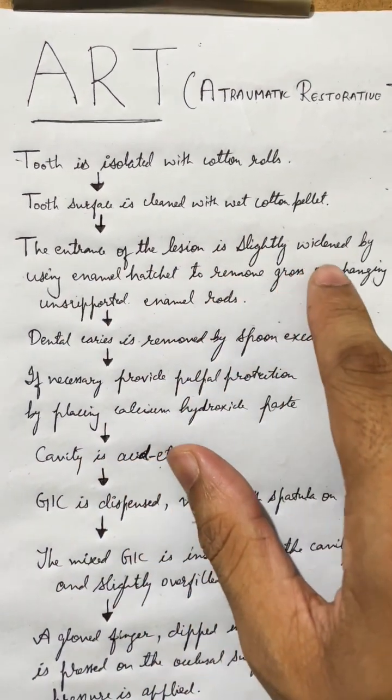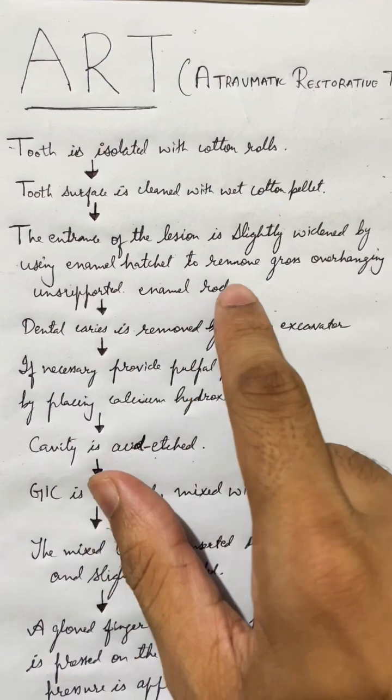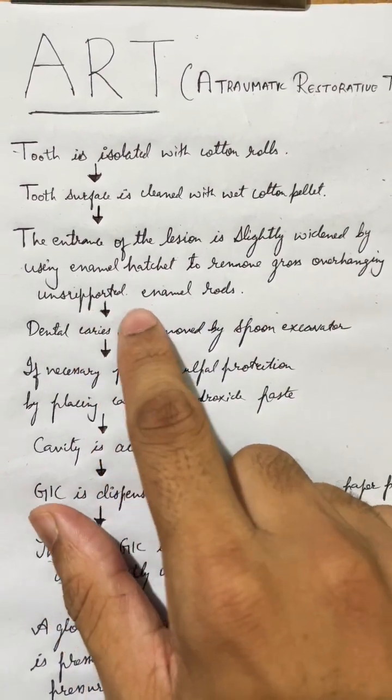The entrance of the lesion is slightly widened by using enamel hatchet to remove gross overhanging unsupported enamel rods.